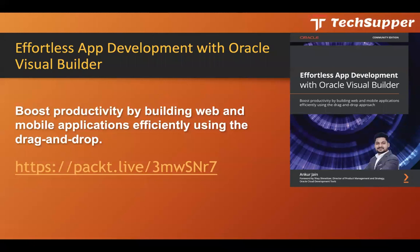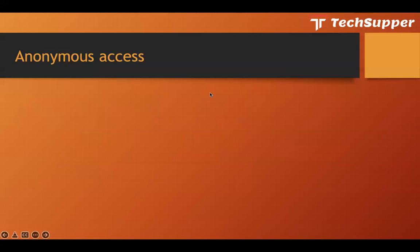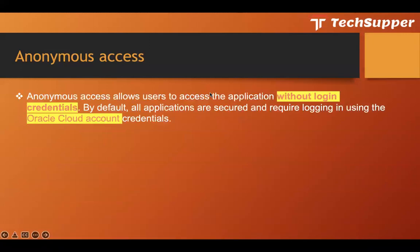Now let's understand what anonymous access is. Anonymous access is when you try to access any application and you don't need to log in — that is called anonymous access. You use many websites in day-to-day life like Amazon, Flipkart, Snapdeal, where you can access part of the application without login.